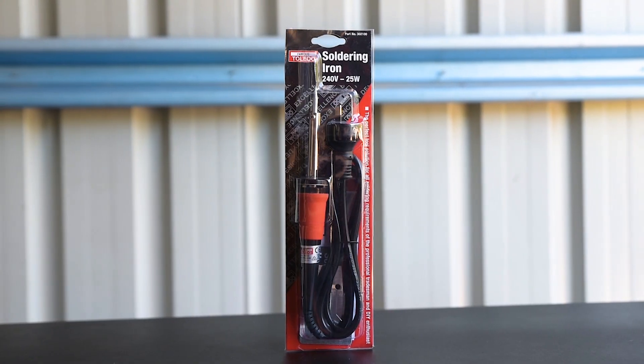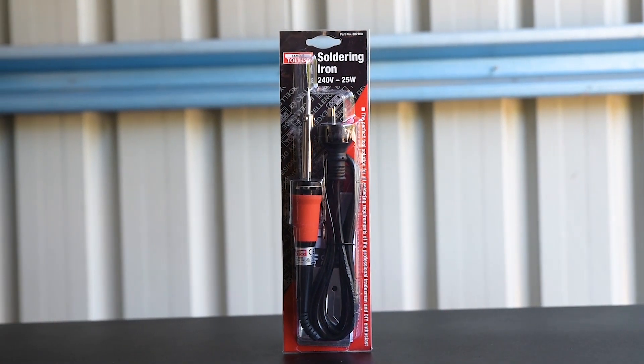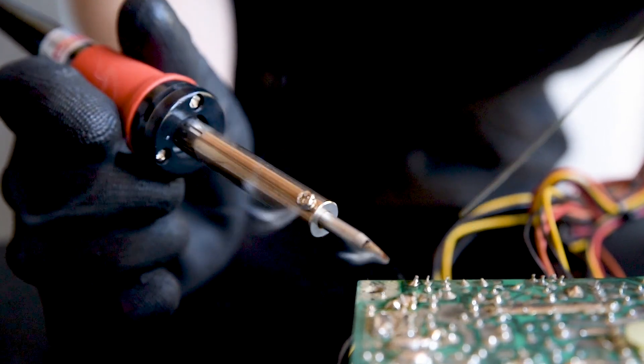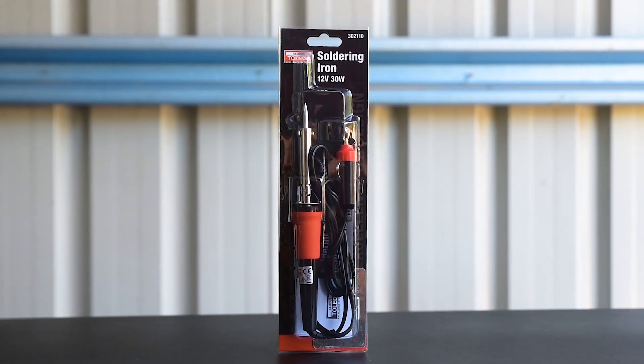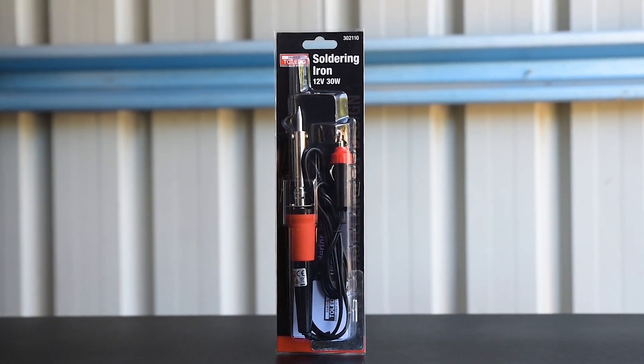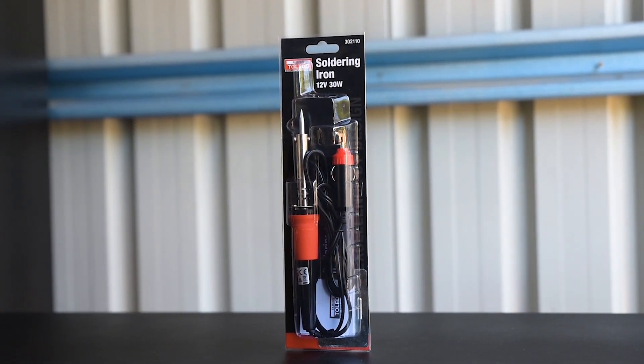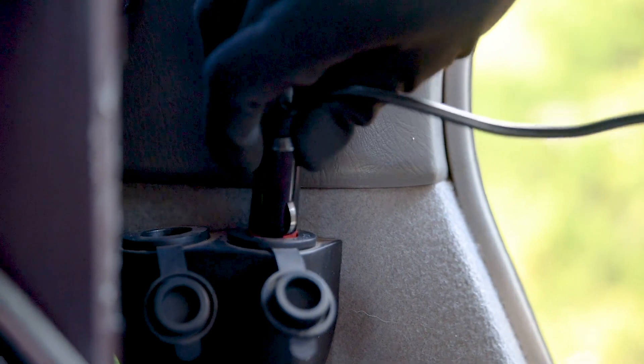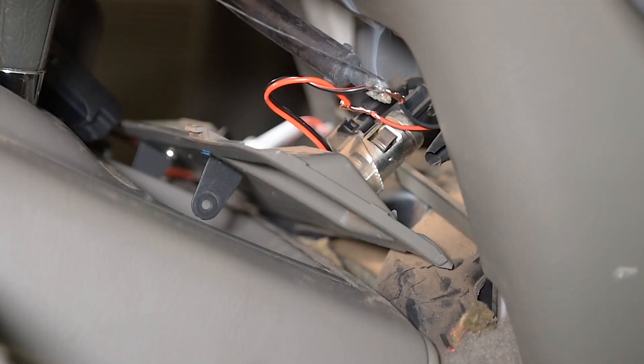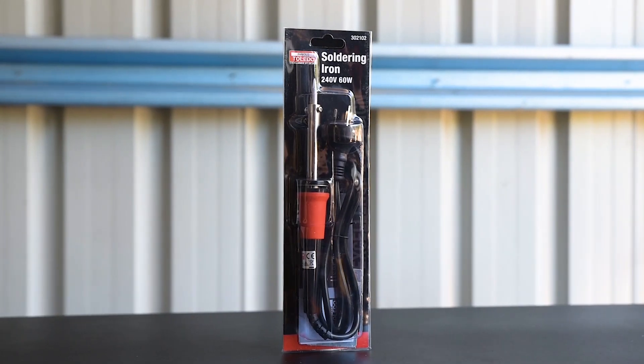The smallest iron is the 25 watt model, ideal for thin gauge wiring and delicate circuit boards. The 12 volt powered 30 watt model with only a little more power is great for these tasks too. It plugs into a vehicle cigarette socket and is perfect for work on the go.